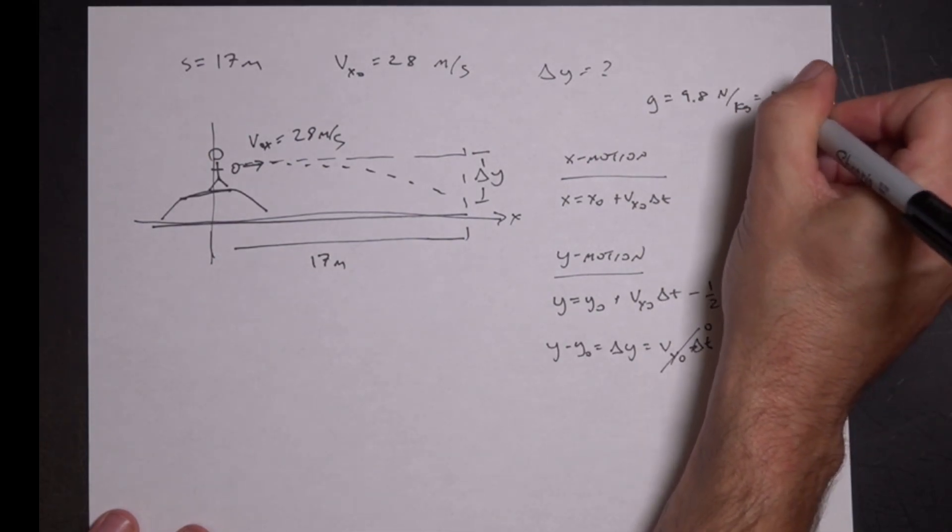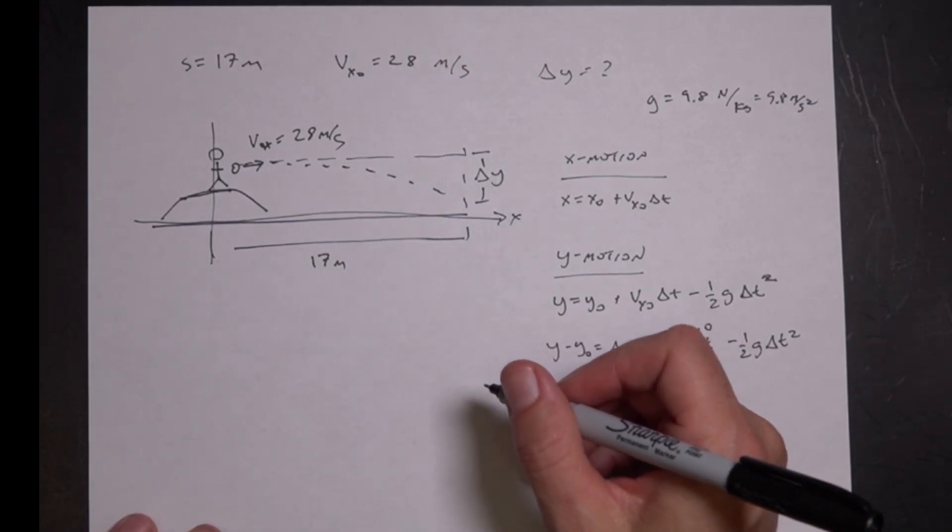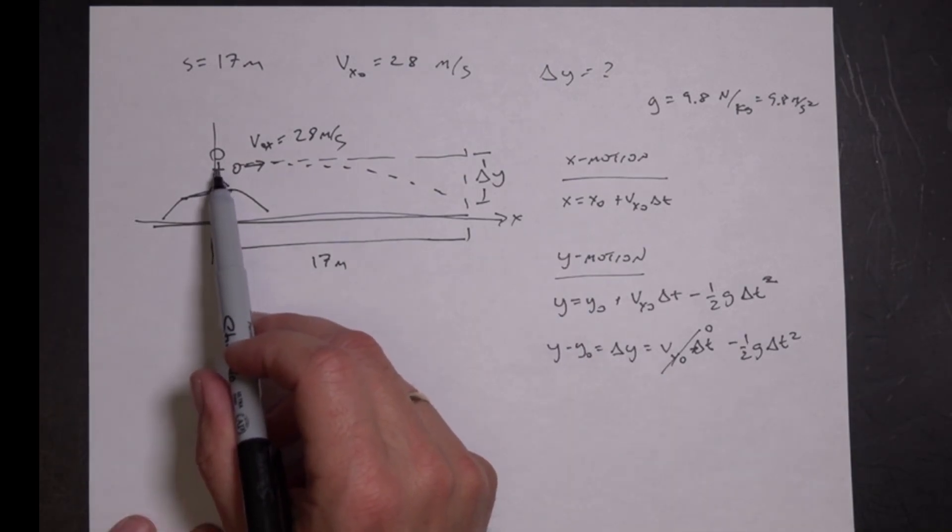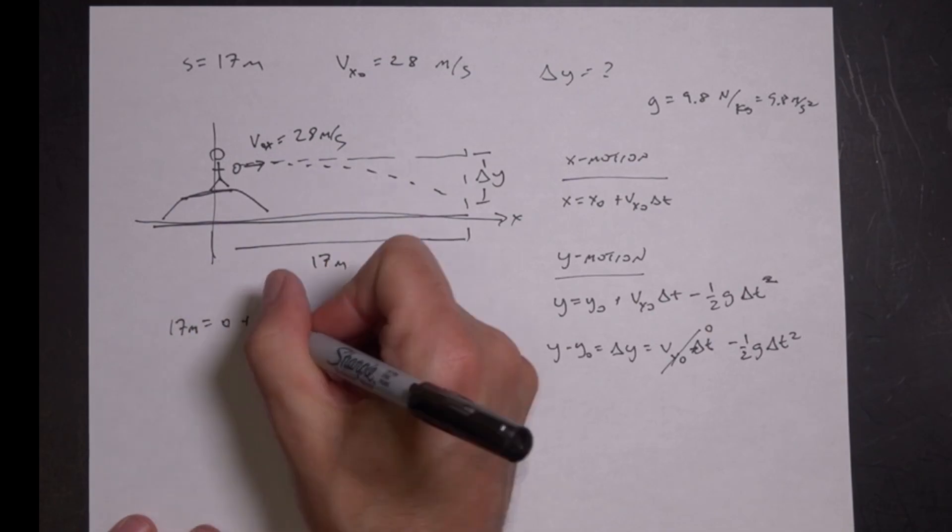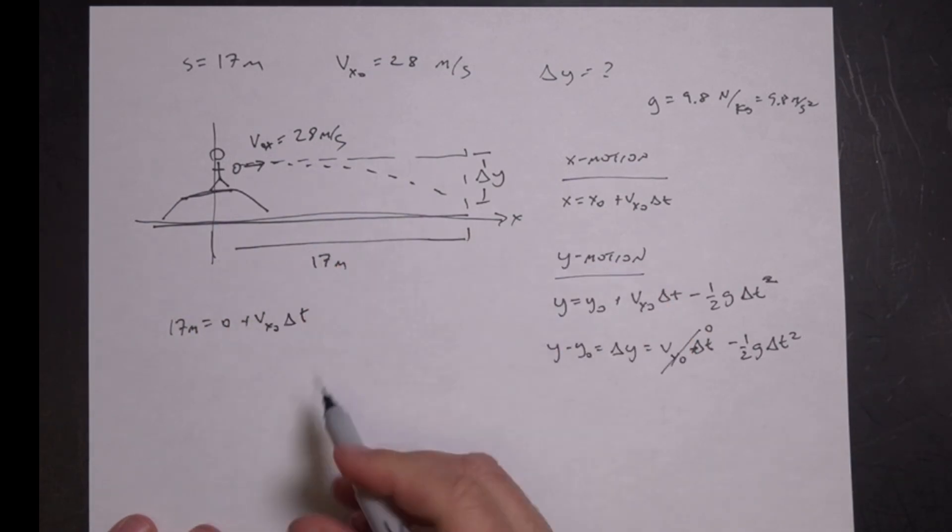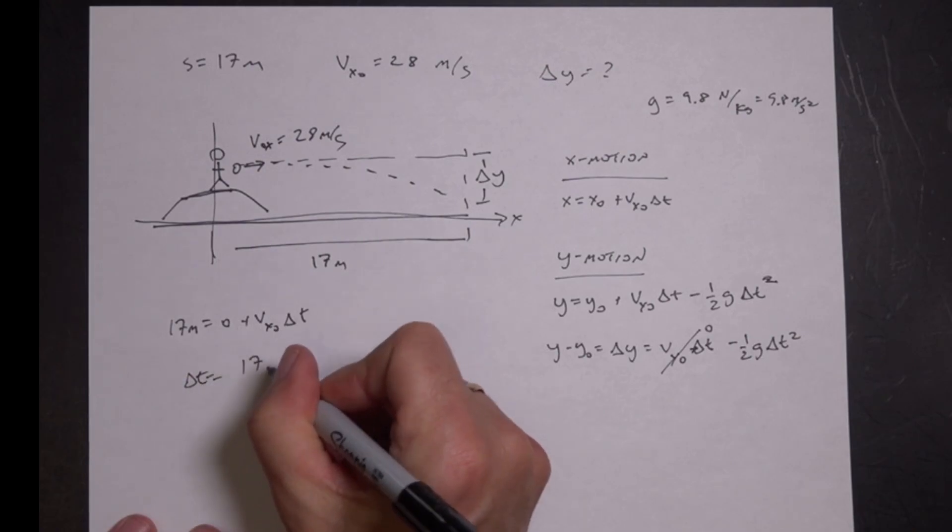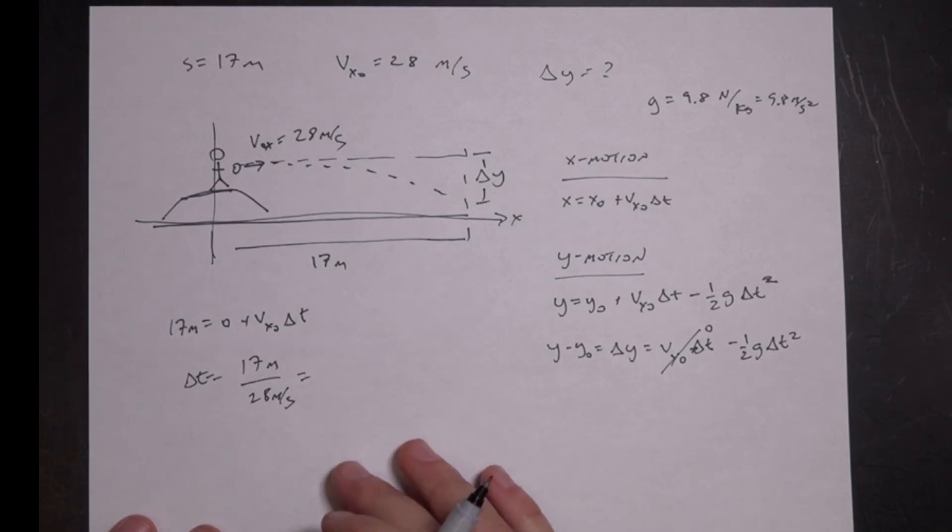So now I know g is 9.8 meters per second squared. I know that, but I don't know t. So in order to get the delta t, I can go over here. So let's say he starts at x equals zero. His x final is going to be 17. So 17 meters equals x zero, which is zero, plus v x zero, which is the initial x velocity, times delta t. Well, I know that. That's 28. I know that I can solve for this. So delta t, it's going to be 17 meters divided by 28 meters per second. That's delta t.